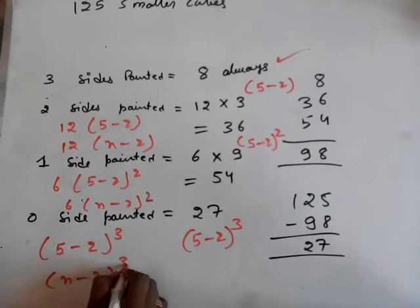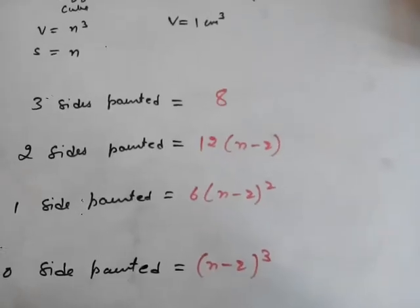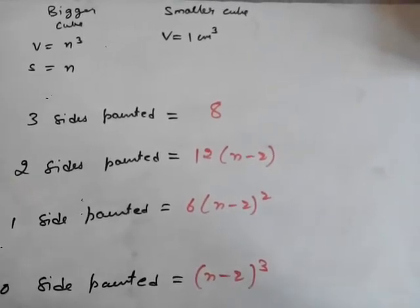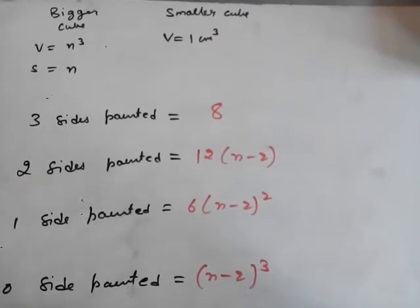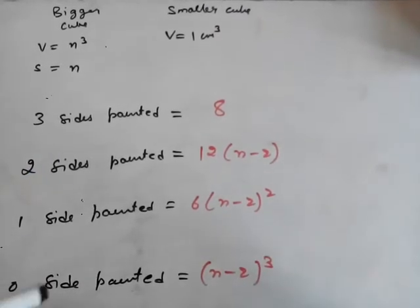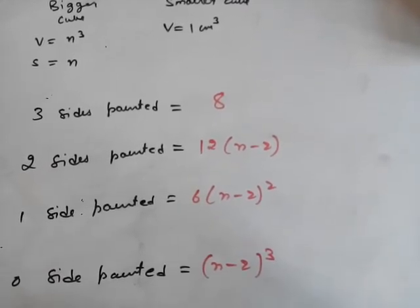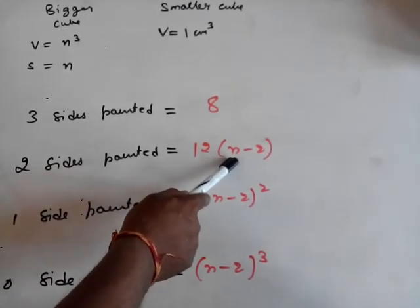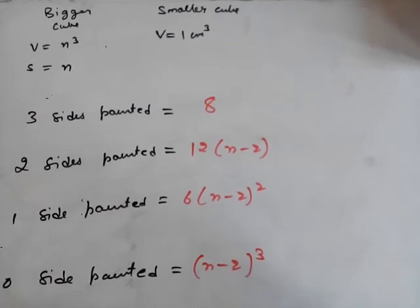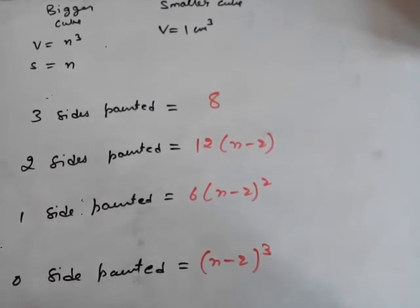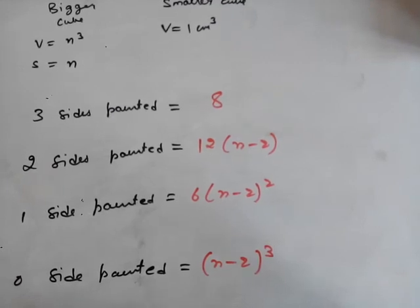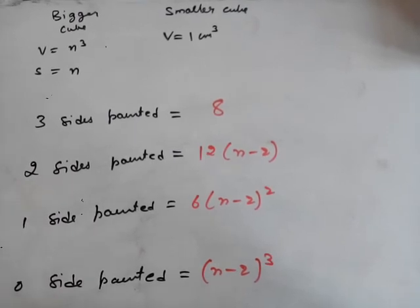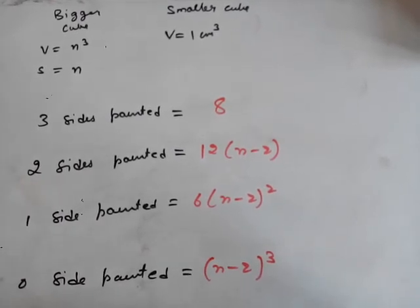And 0 sides painted = (n−2)³. So, if we have a bigger cube with volume n³ split into smaller cubes of unit volume: 3 sides painted = 8; 2 sides painted = 12×(n−2); 1 side painted = 6×(n−2)²; 0 sides painted = (n−2)³. Here n is the side length of the bigger cube. I hope the question on painted cubes is clear to you. Thank you.